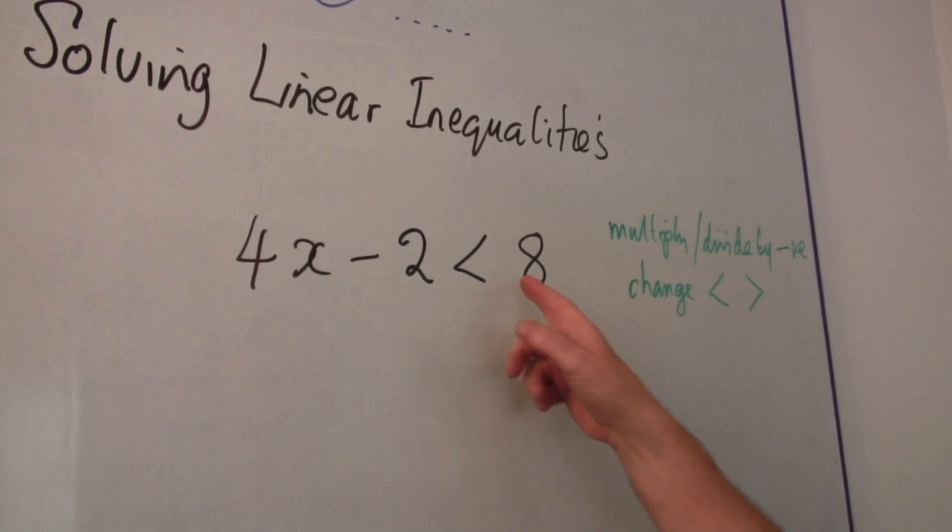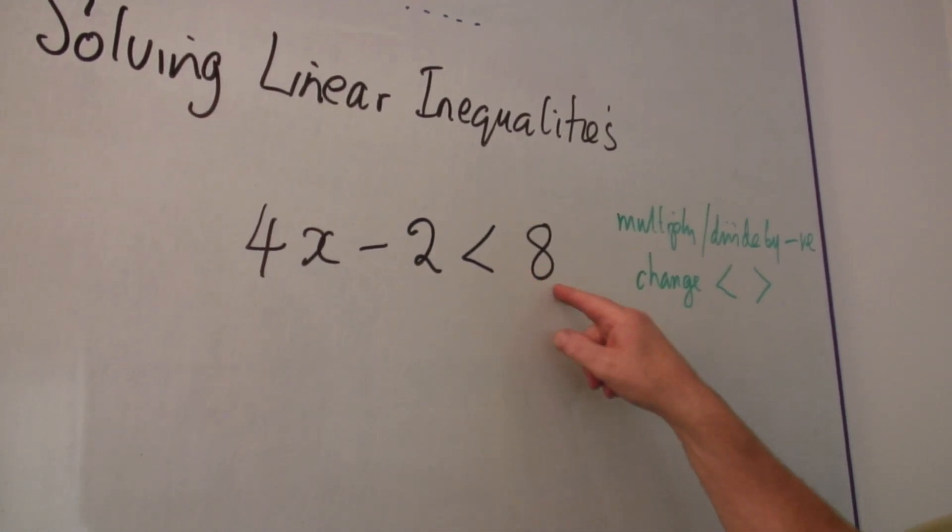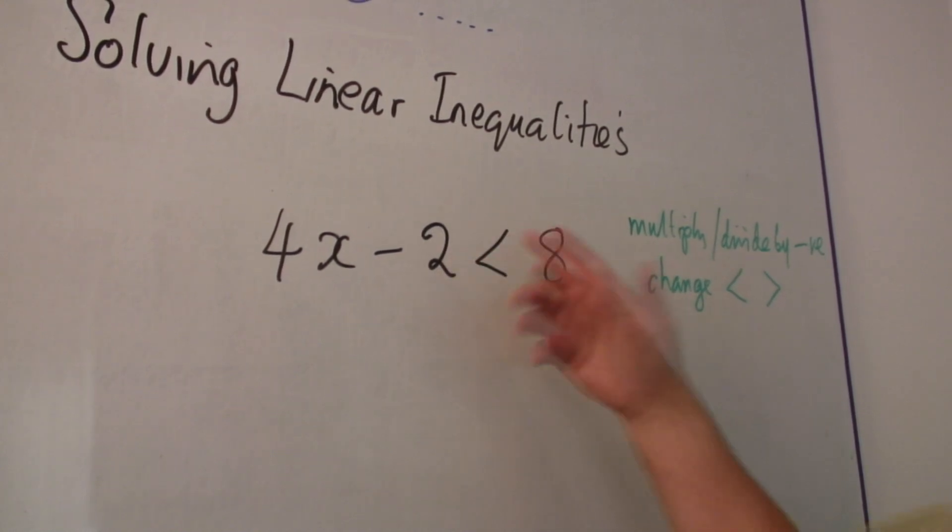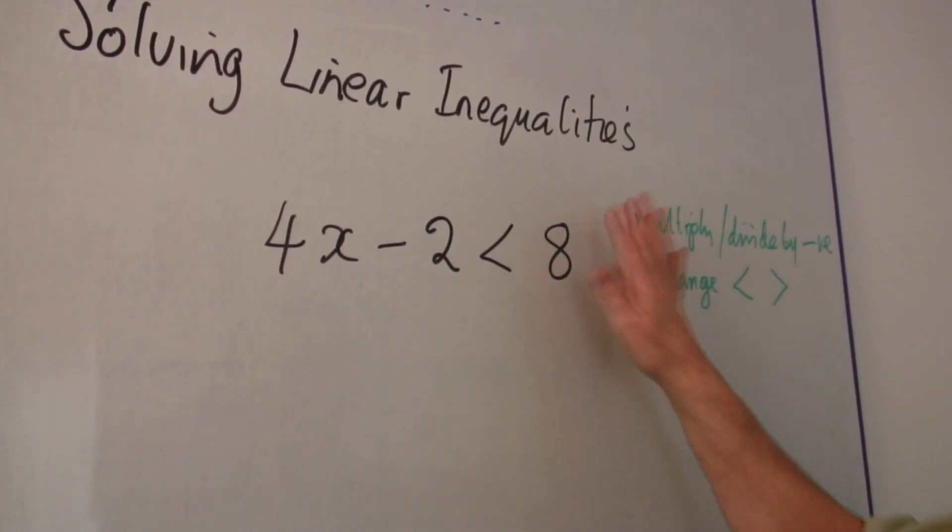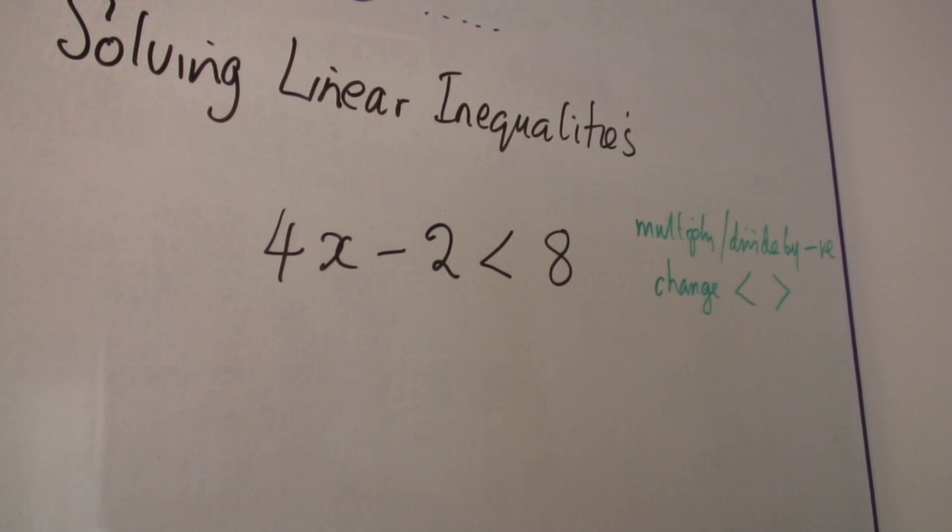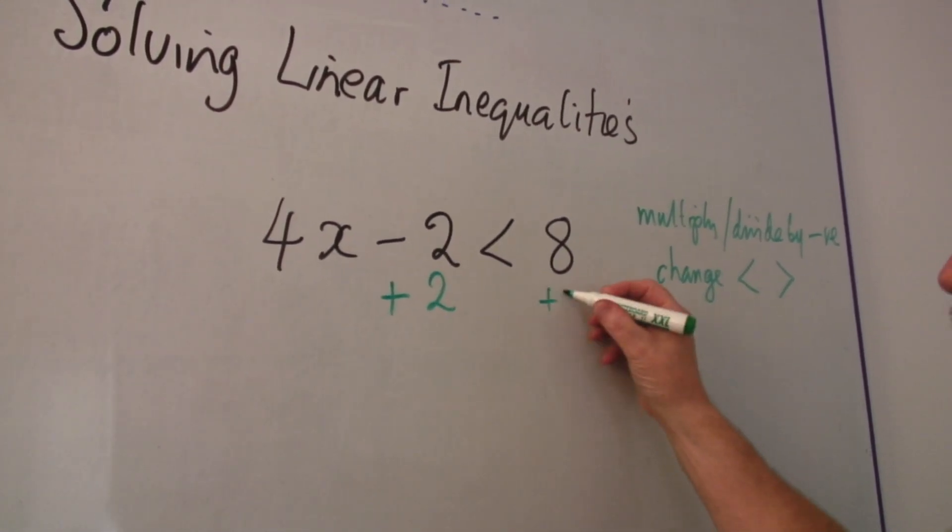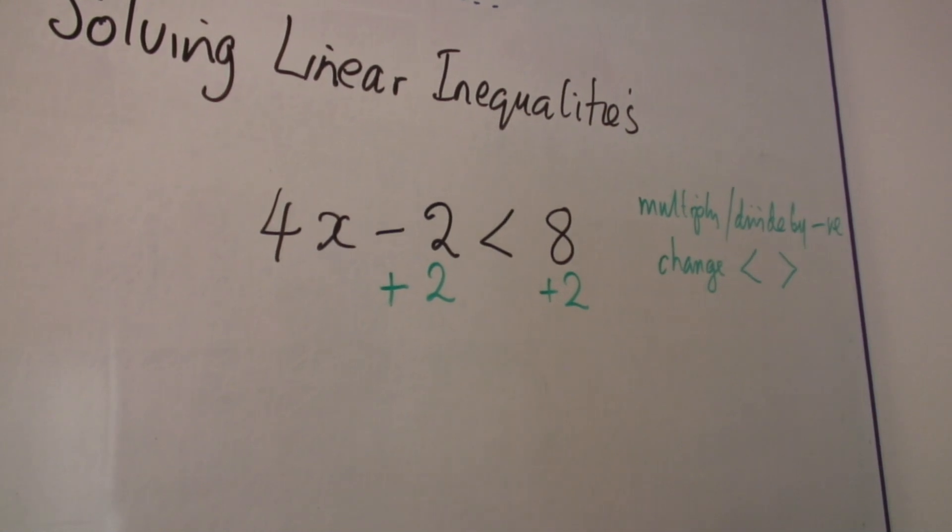Because after all, if that is less than 8 and I add 2 to there and add 2 to there, this side is still going to be bigger than that. So if I add 2 here and I add 2 here, the relationship is preserved. This is the idea.